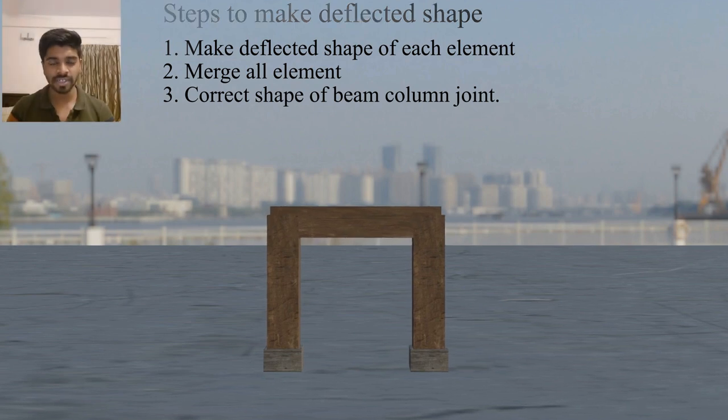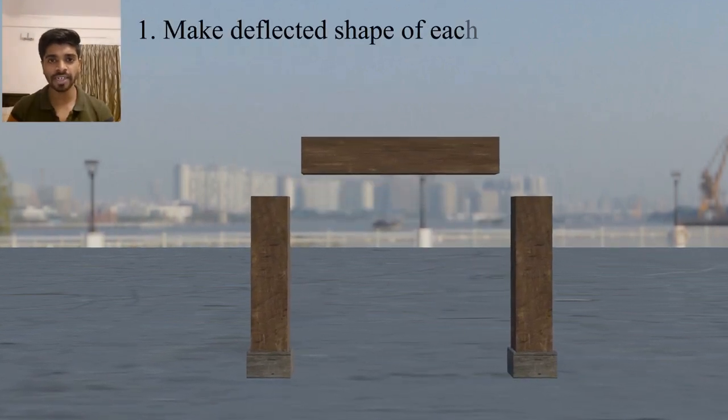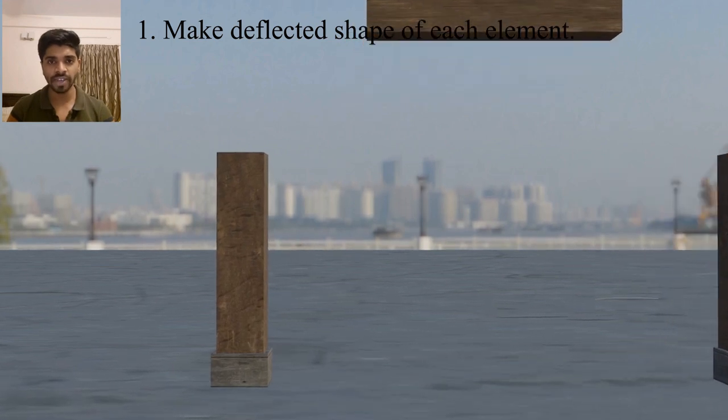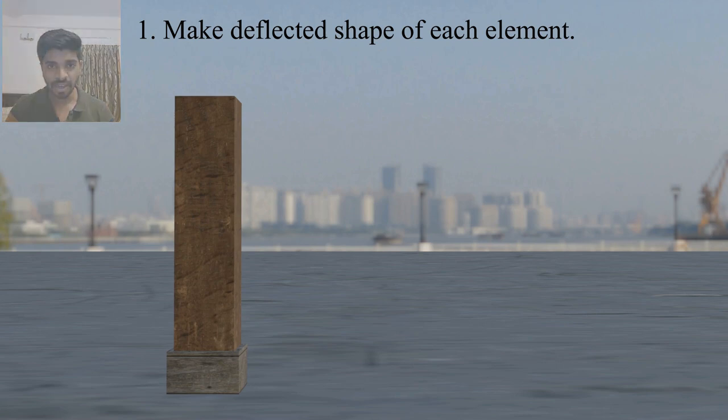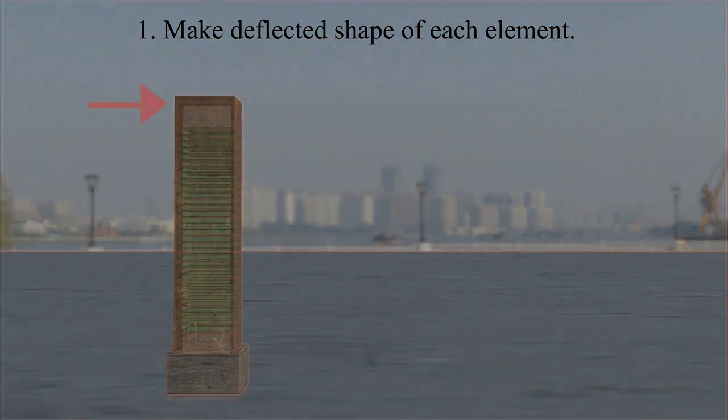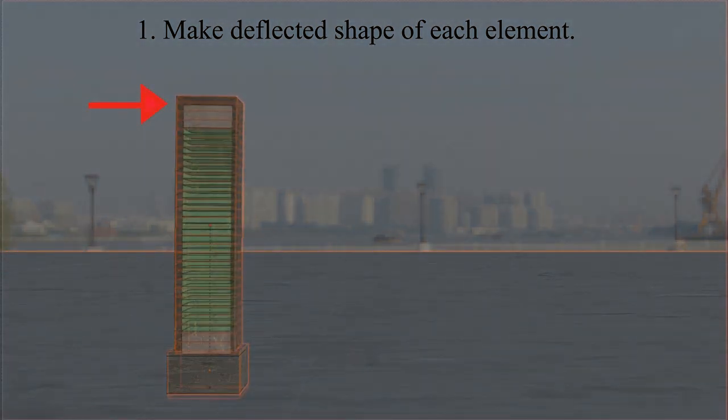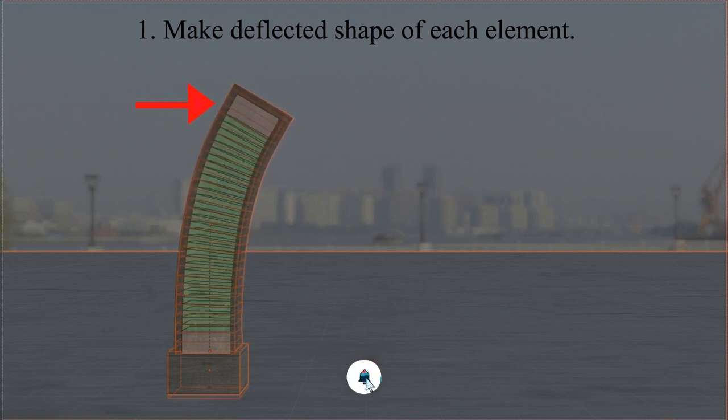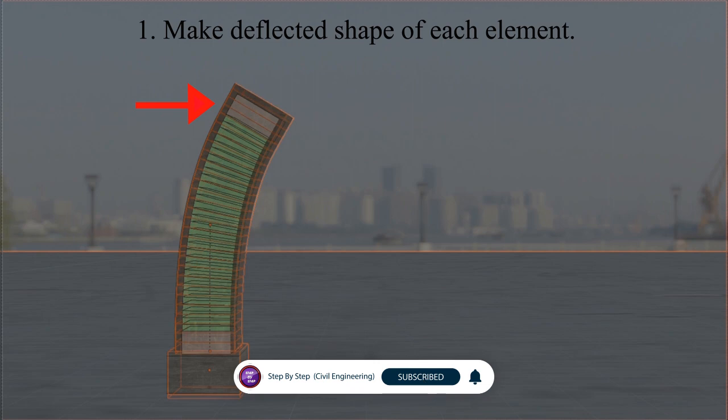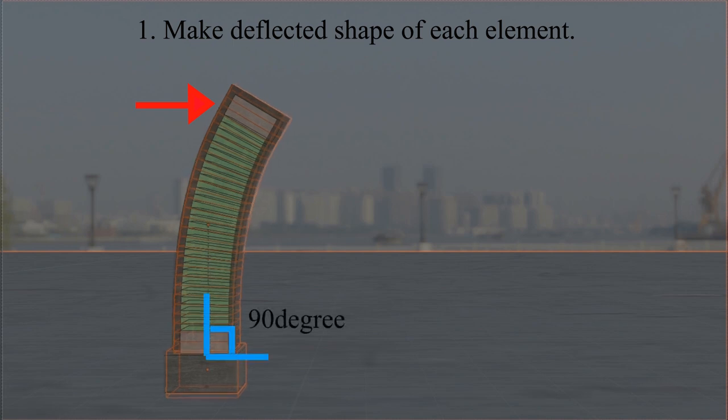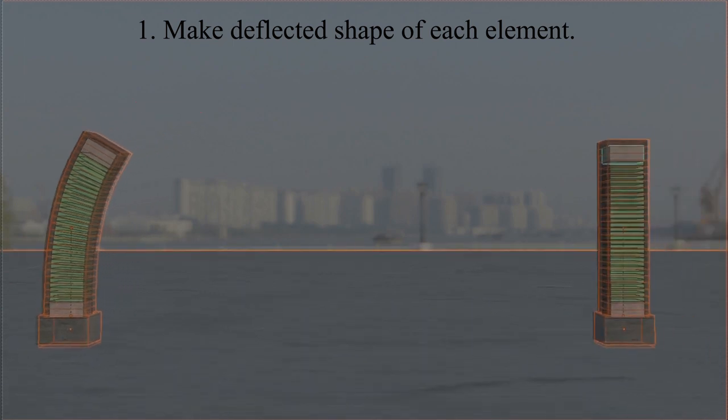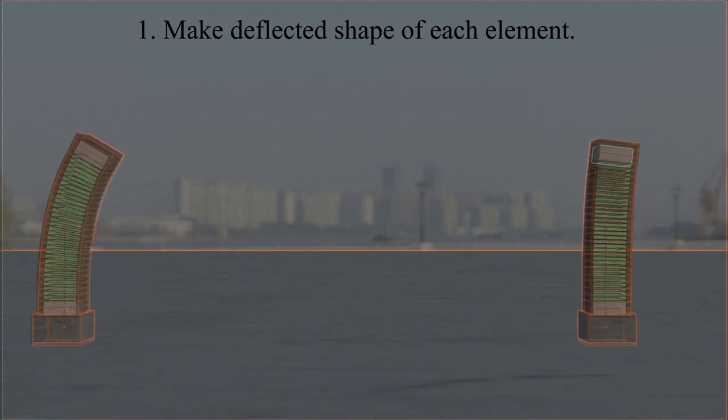So let's start with the first step. First step is to make the deflected shape separately of each element. Here we have three elements: two of column and one is beam. Let's first look at the deflected shape by simple logic. If we apply a lateral load at the top of this column, it will go sideways. And what about at the bottom of the column? You already know that the continuity of the support, here the bottom of the column is connected with the fixed support, so the angle is maintained in the deflected shape.